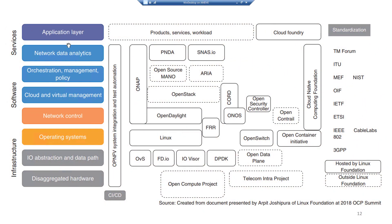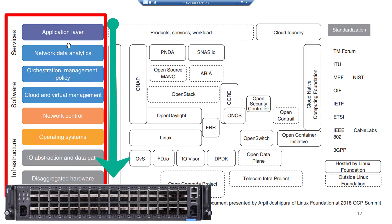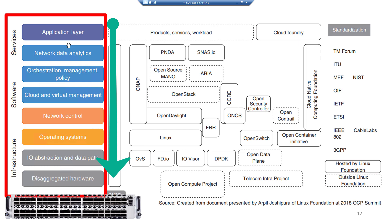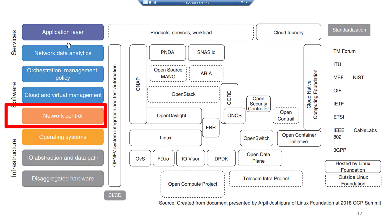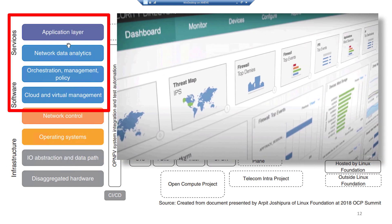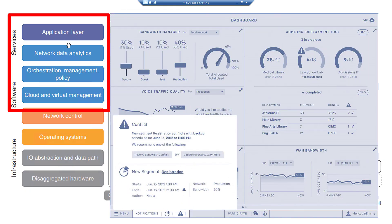This diagram allows us to look at SDN from all angles. Starting from the bottom left, disaggregated hardware includes open box switches, routers, firewalls, and IoT devices. Moving up, we see Linux operating systems running on various hardware types. Above that is network control, then cloud virtual management, orchestration management policies, network data analytics, and the application layer — giving a big picture of what's happening with SDN.